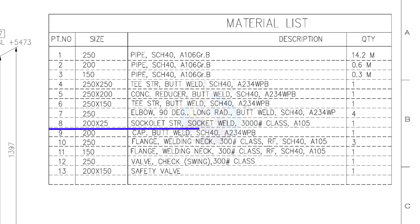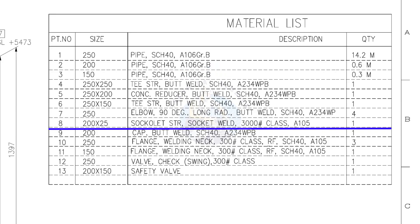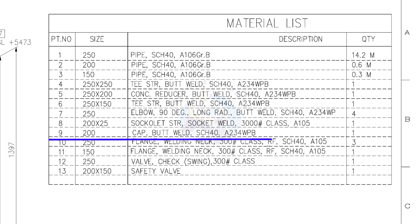Item number 8: 200 into 25 sokolet, socket welded, class 3,000 pound. Quantity: 1. Item number 9: cap, butt welded, schedule 40. Quantity: 1.